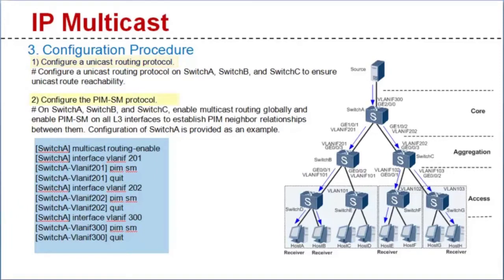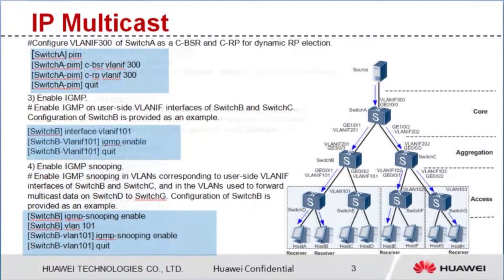Step 2: configure the PIM-SM protocol. First, enable multicast routing on switches A, B, and C, and enable PIM-SM on all three interfaces of these switches to establish PIM neighbor relationships between them. The configuration on Switch A is provided as an example. Second, configure VLAN-IF-300 on Switch A as a candidate BSR and candidate rendezvous point for the dynamic rendezvous point election.